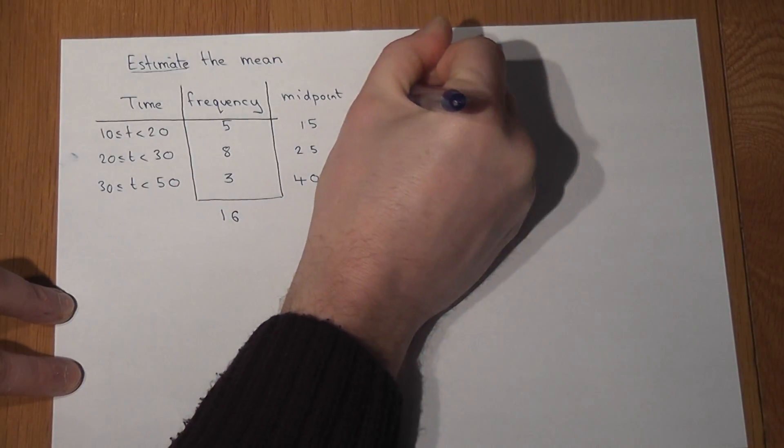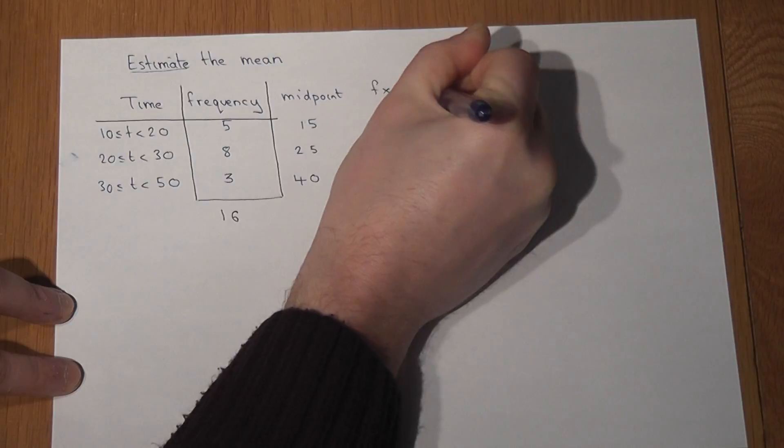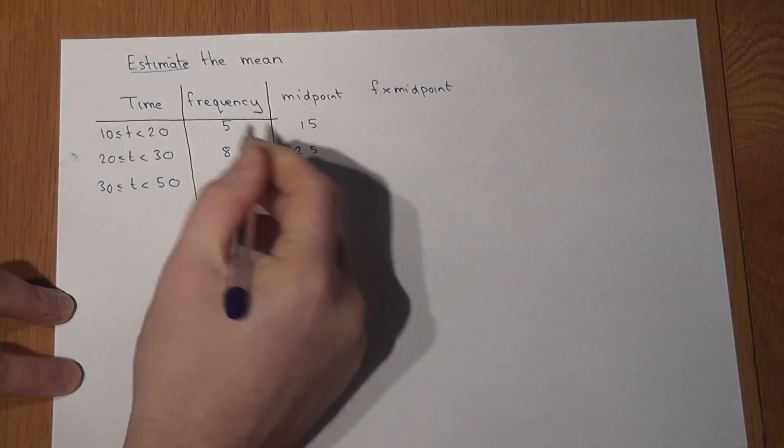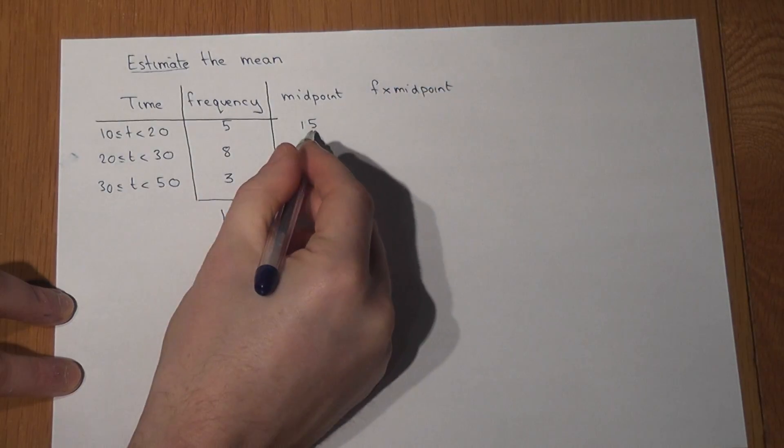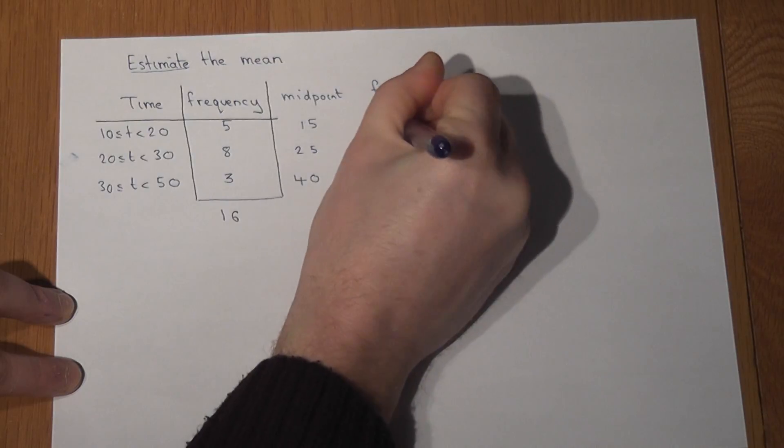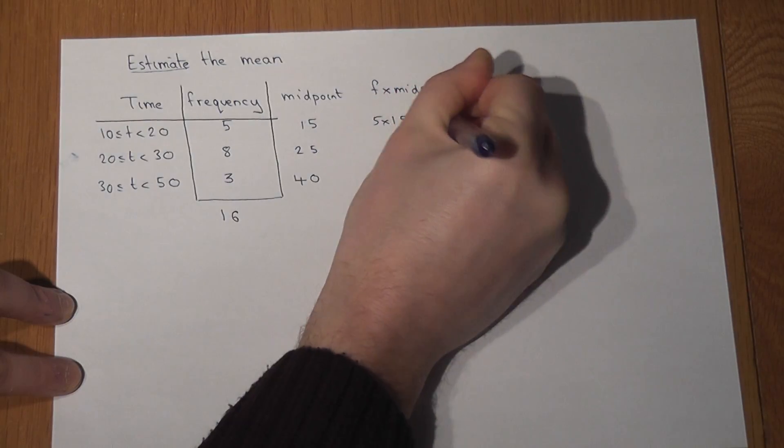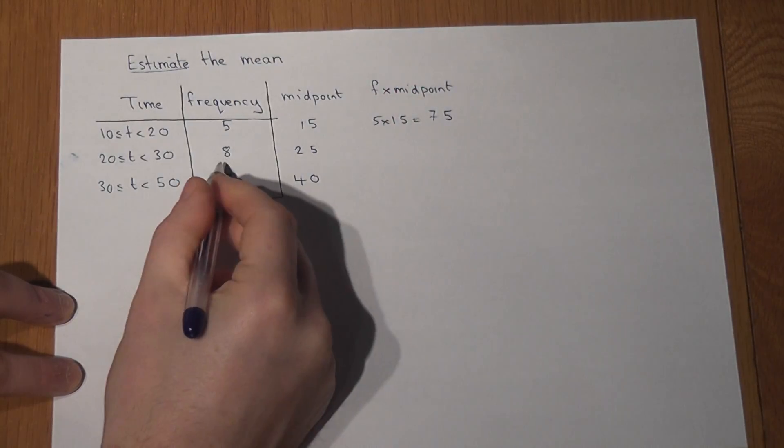So I do 5 lots of 15 which is 75. I do 8 lots of 25 which is 200, and I do 3 lots of 40 which is 120.